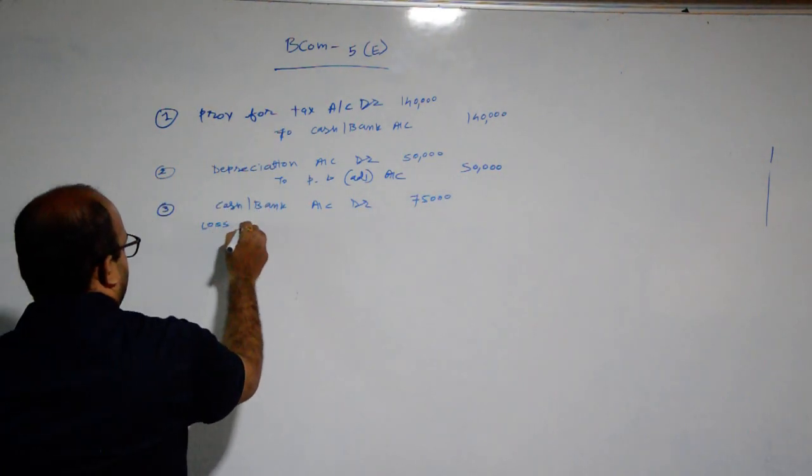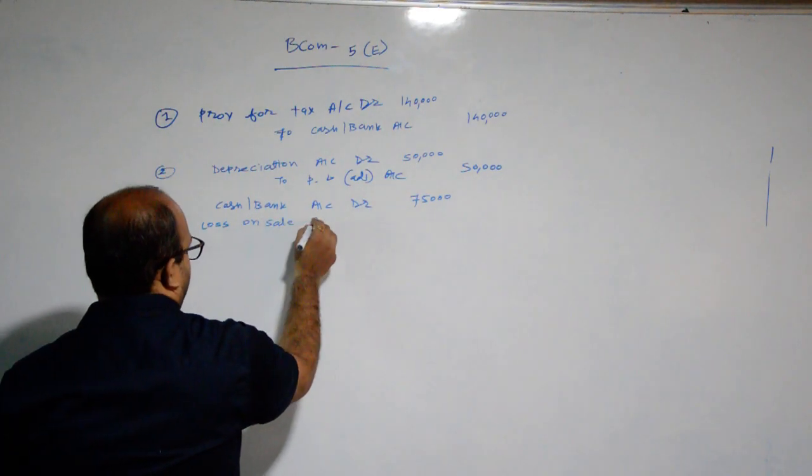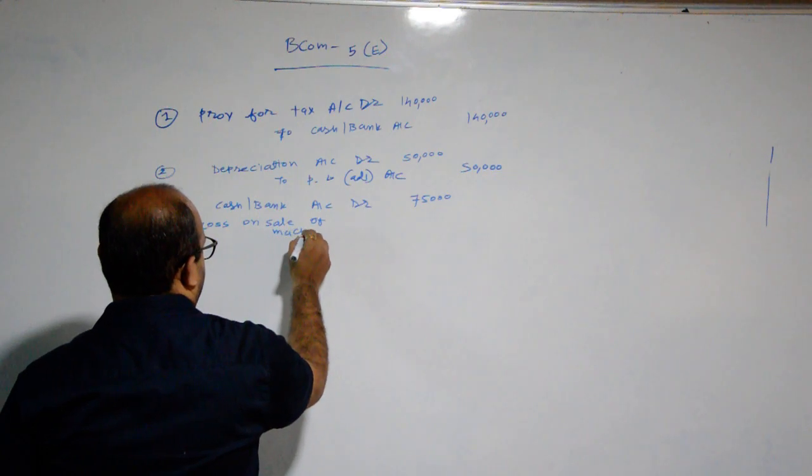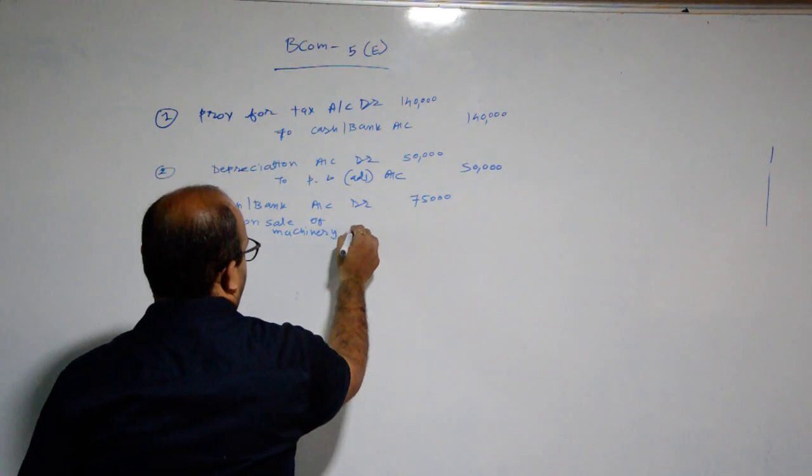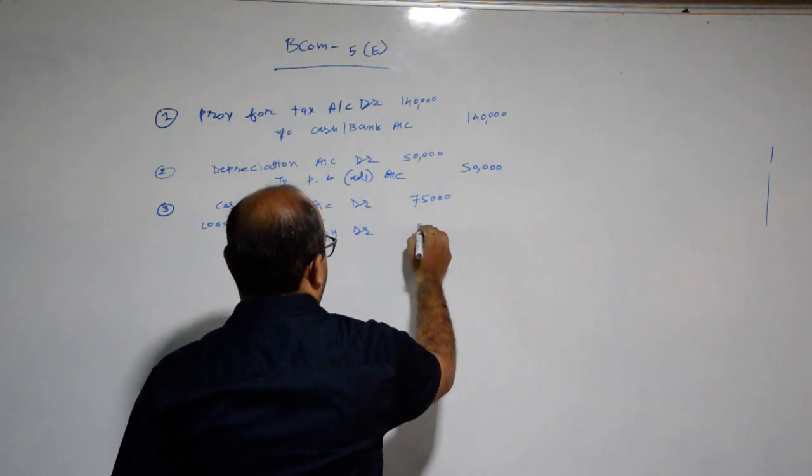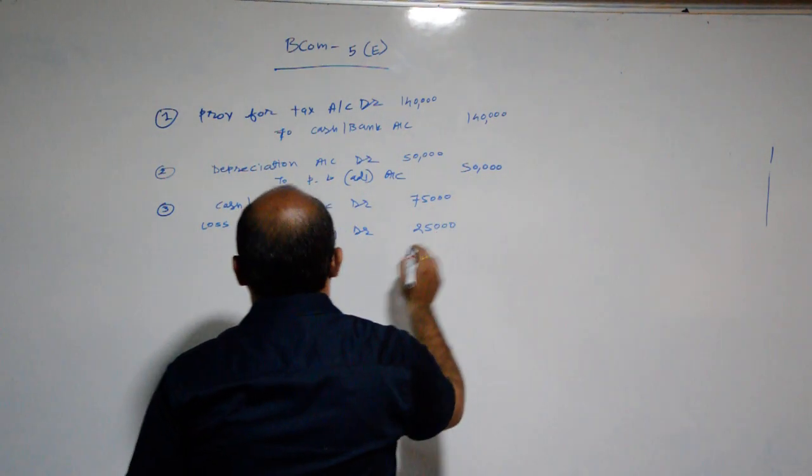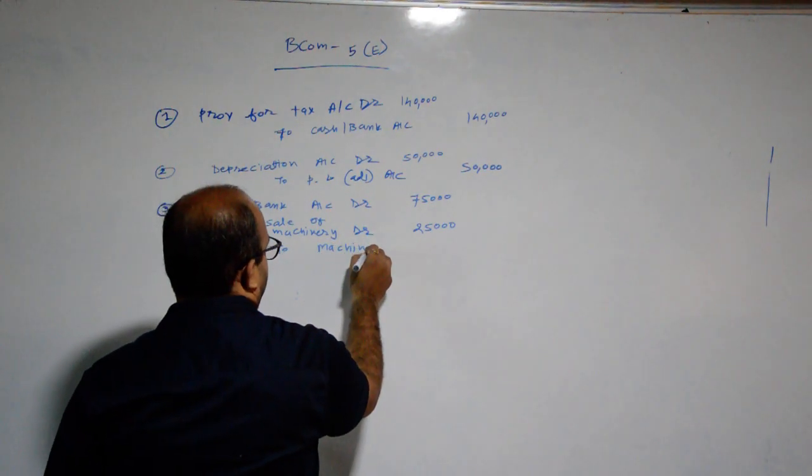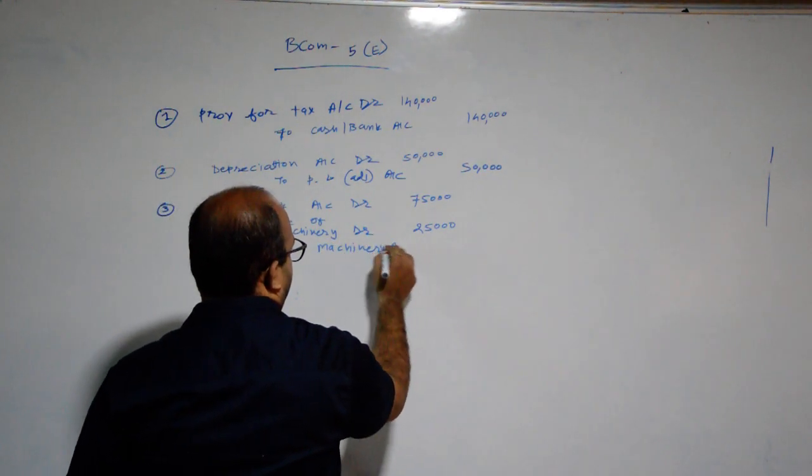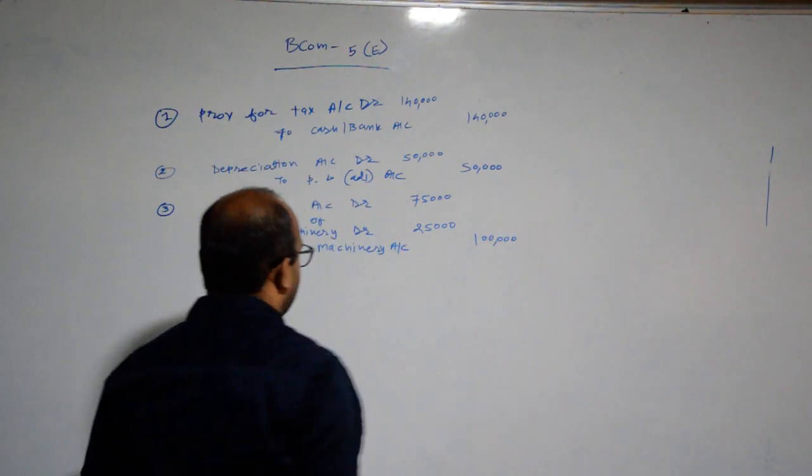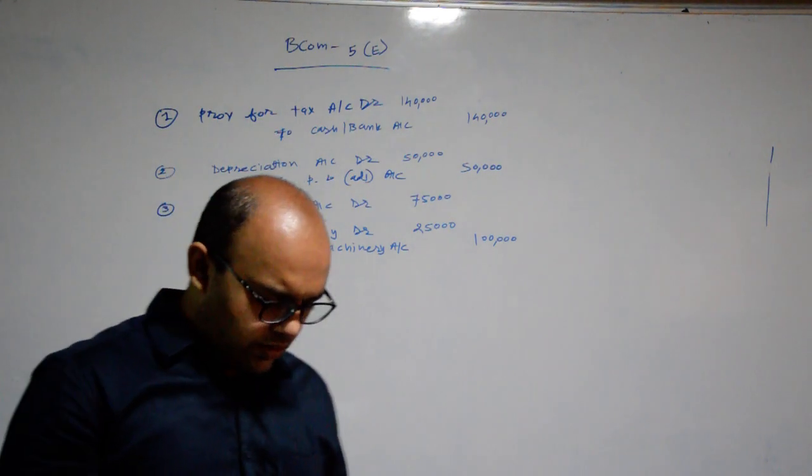Cash or bank account debit Rs. 75,000. Loss on sale of machinery debit Rs. 25,000. To machinery account Rs. 1,000,000.